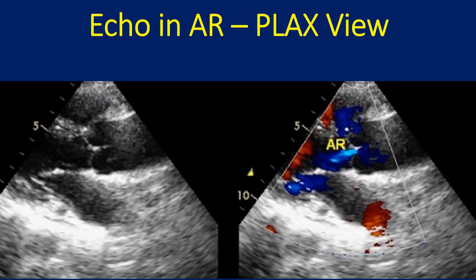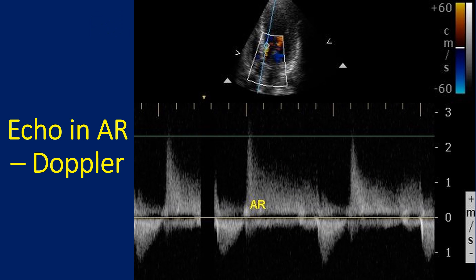The parasternal long axis view shows a small AR jet, which would be taken as trivial AR with no hemodynamic significance. The left atrium and left ventricle are not dilated. Trivial aortic regurgitation on Doppler interrogation from the apical 5-chamber view shows an incomplete jet, as obtained when the regurgitant flow is less, as in trivial or mild AR. The jet below the baseline represents forward aortic flow in systole, while the AR in diastole is seen above the baseline, as the regurgitant flow into the left ventricle is towards the transducer in this view.